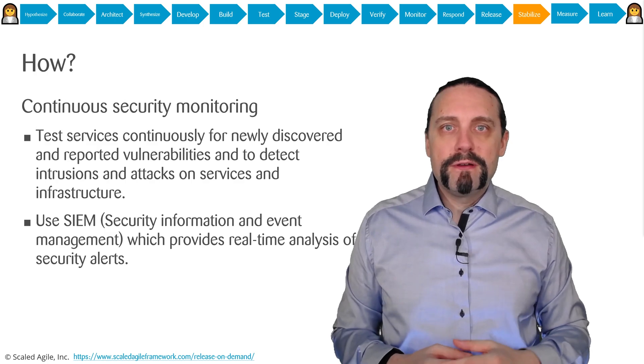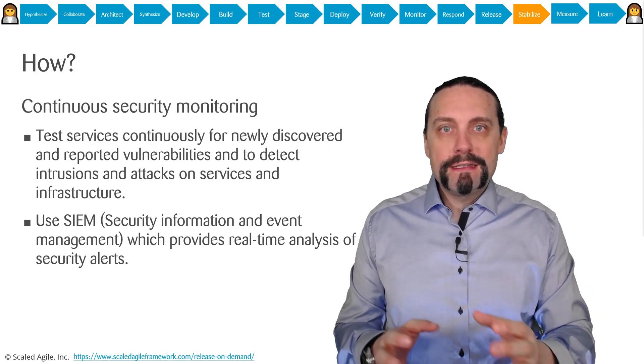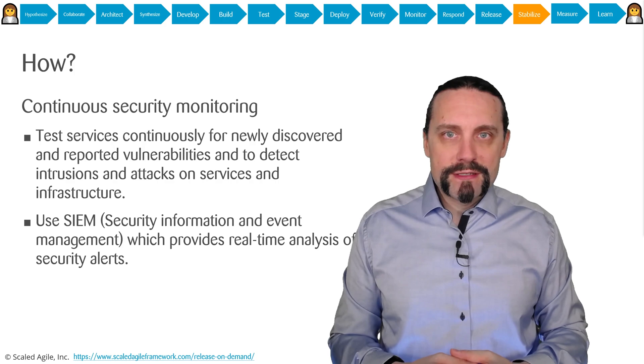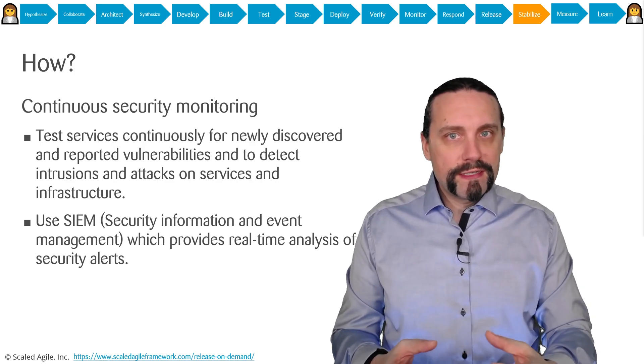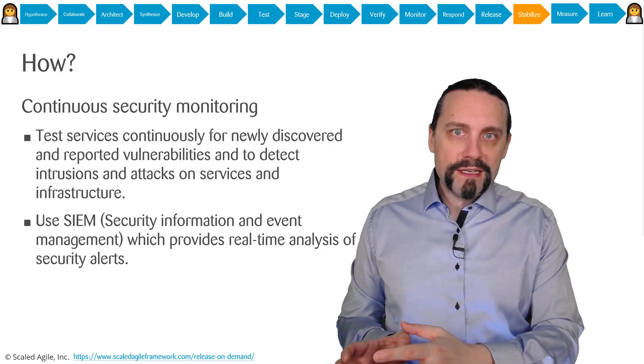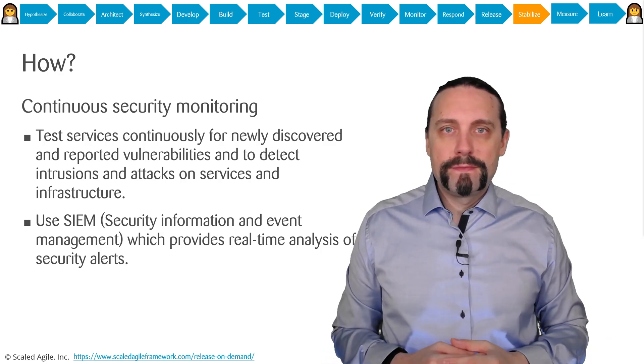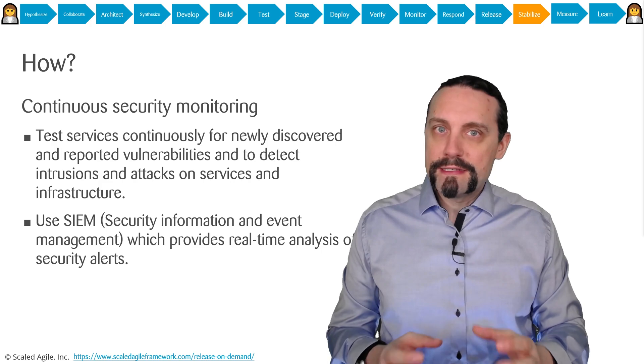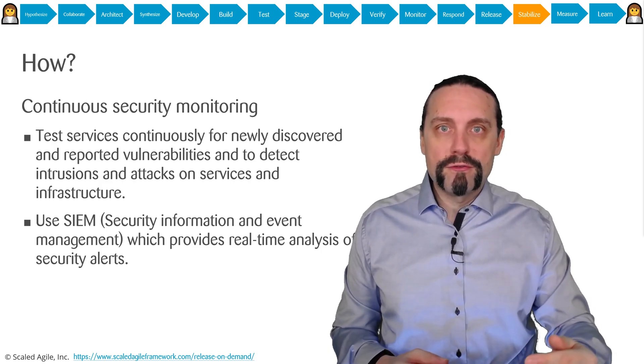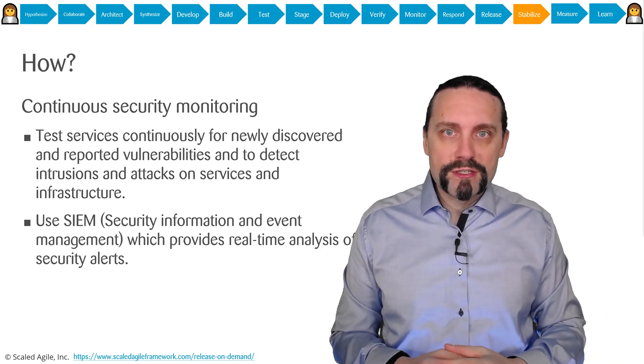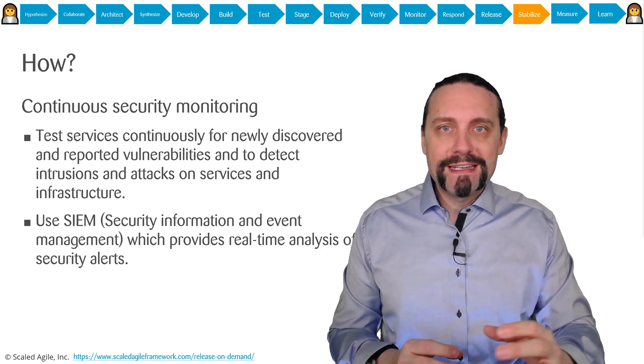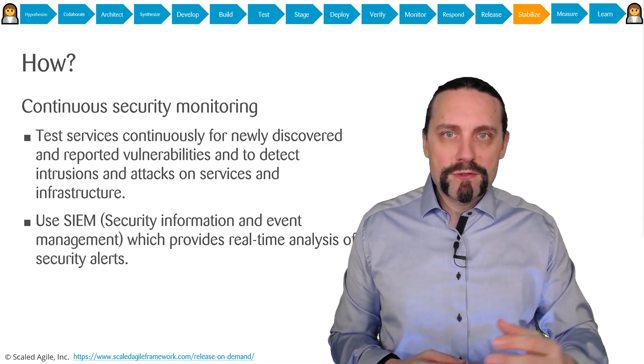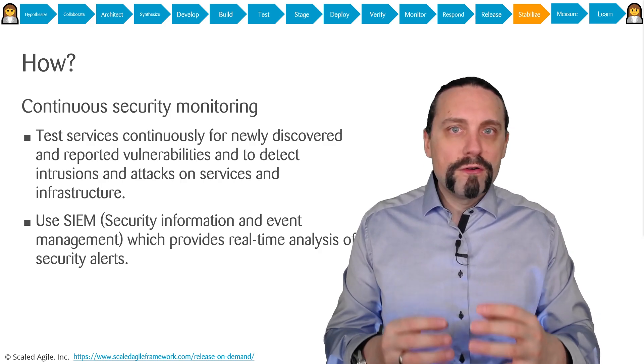In the build step, we're already automatically analyzing statically and dynamically the security of our applications. We scan there for security vulnerabilities in our application and in the libraries. But only scanning for vulnerabilities in the newly created code is not enough, because we have code already running in production. So we also need to take care of that code.